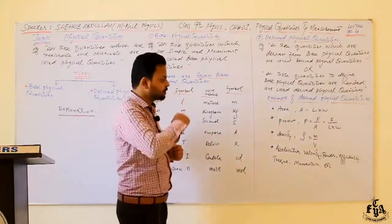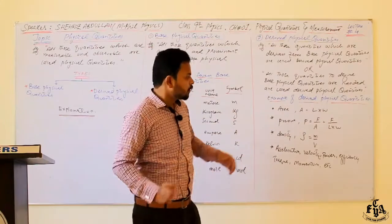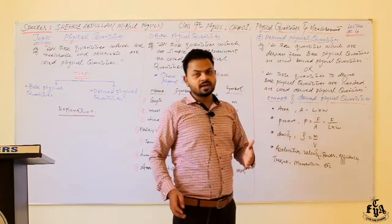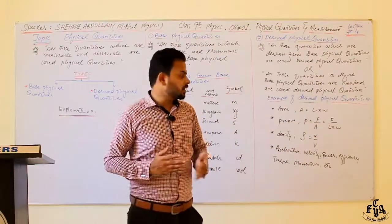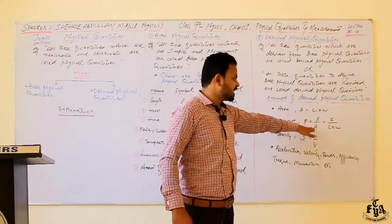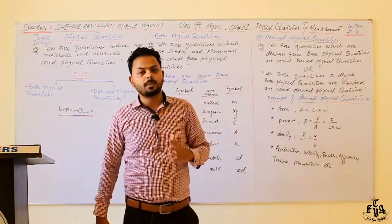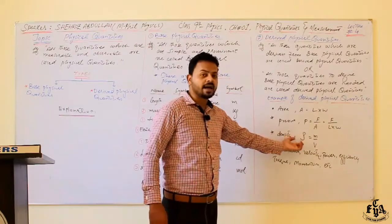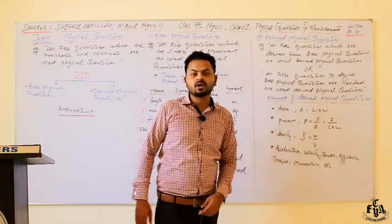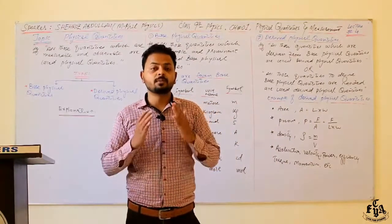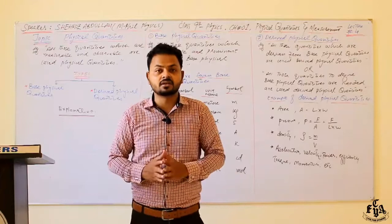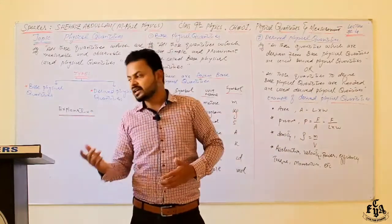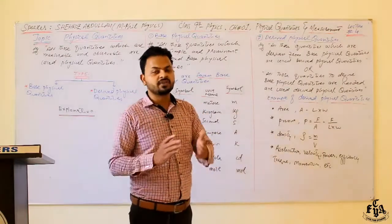Similarly, pressure equals force per unit area, and area depends on length, so pressure is also a derived physical quantity. Density, represented by rho (ρ), is mass per unit volume — it uses mass, making it a derived quantity as well. Other examples include acceleration, velocity, power, efficiency, torque, and momentum — all derived physical quantities.